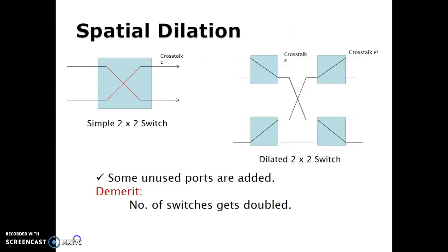Spatial dilation: this diagram shows the two-by-two switch and the two-by-two dilated switch. The merit of this system is that the number of switches is doubled. Sometimes it uses only one switch, and the other three switches must be in an ideal condition.